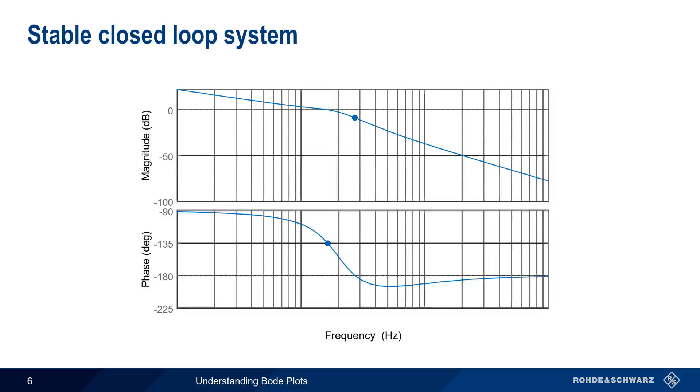Let's look at a couple of examples. Here, the measured phase at 0 dB is minus 135 degrees, so we have a phase margin of 45 degrees. The gain at minus 180 degrees is minus 9 dB, so we have a gain margin of 9 dB. Since we have a positive phase margin, this system is stable.